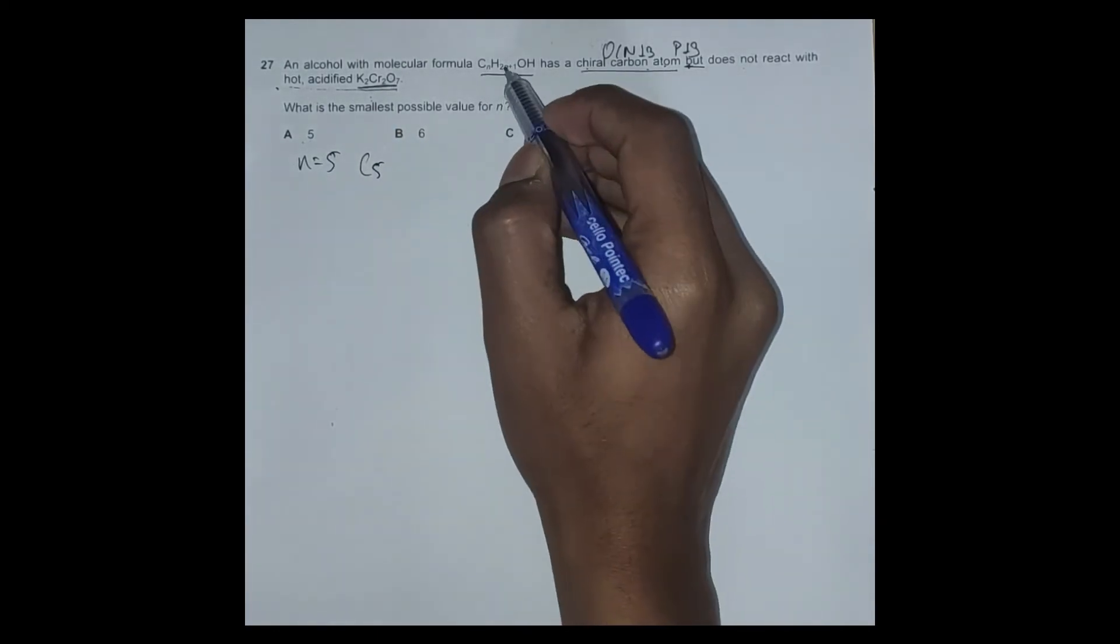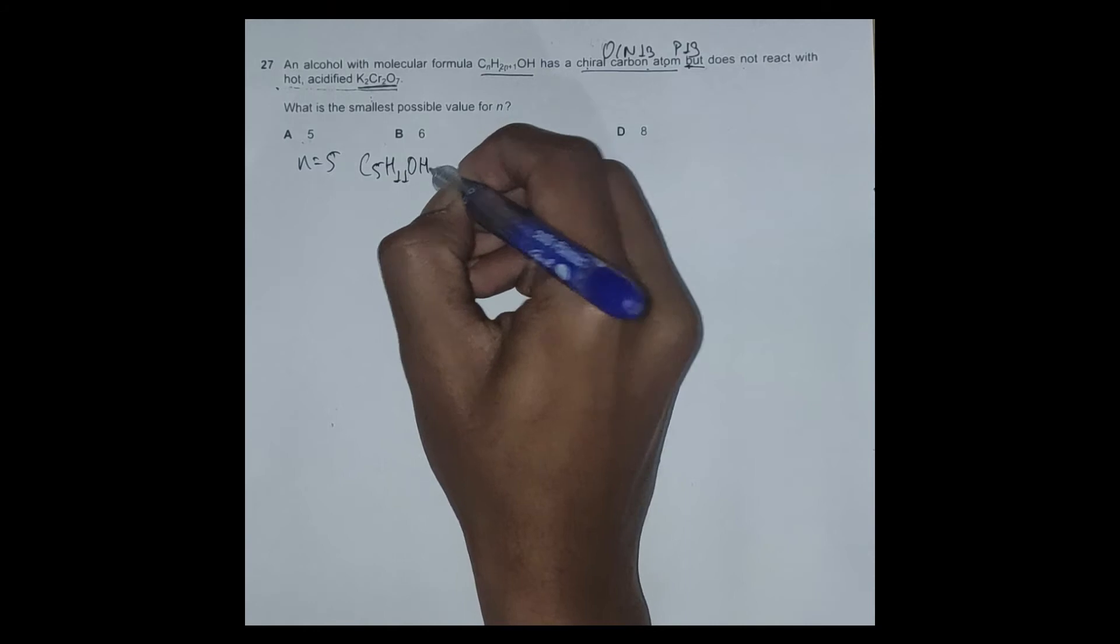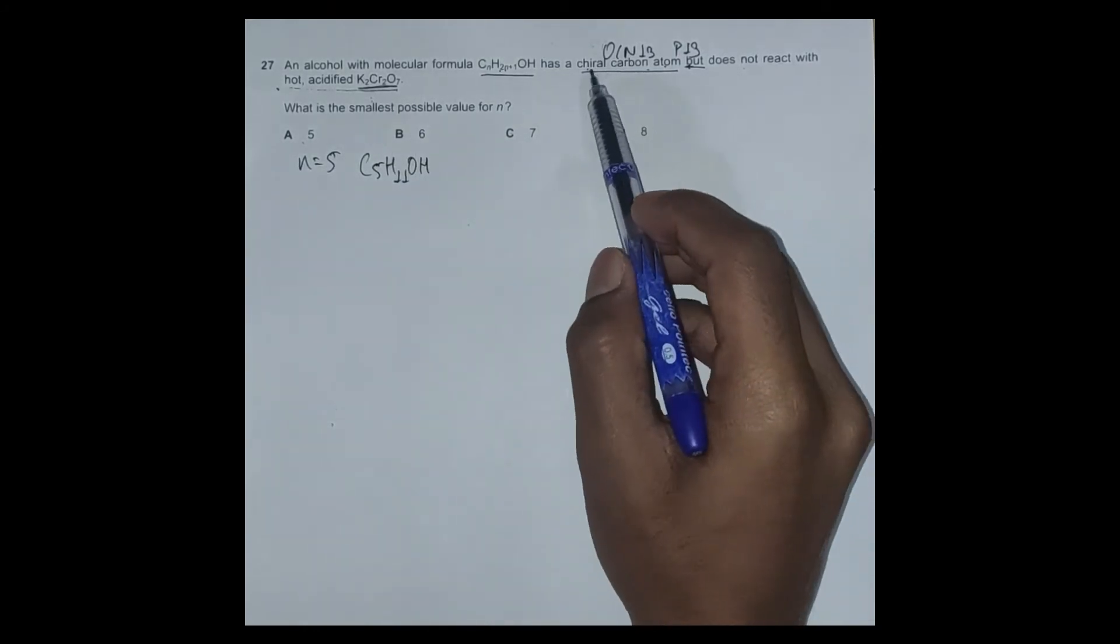When n equals 5, we have the molecular formula as C5H11OH. We should check if we can satisfy both these conditions.